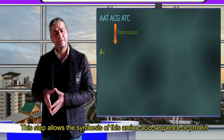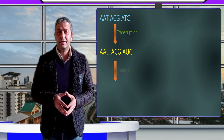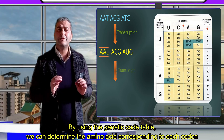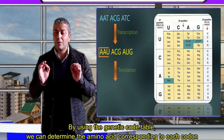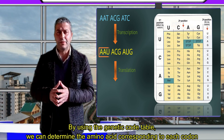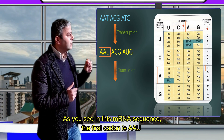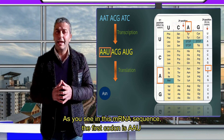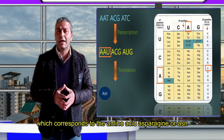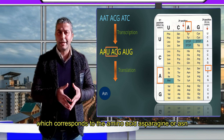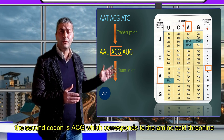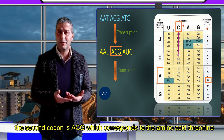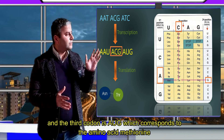The second step, translation, allows the synthesis of the amino acid sequence or protein. By using the genetic code table we can determine the amino acid corresponding to each codon. As you can see in this mRNA sequence, the first codon is AAU which corresponds to the amino acid asparagine (ASN), and the second codon is ACG which corresponds to the amino acid threonine.